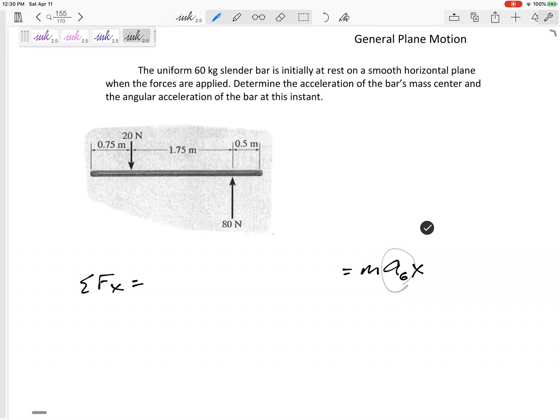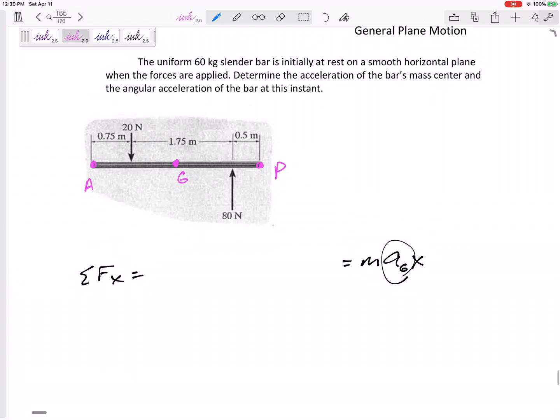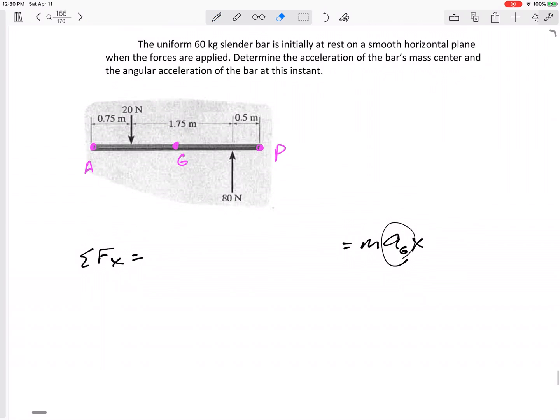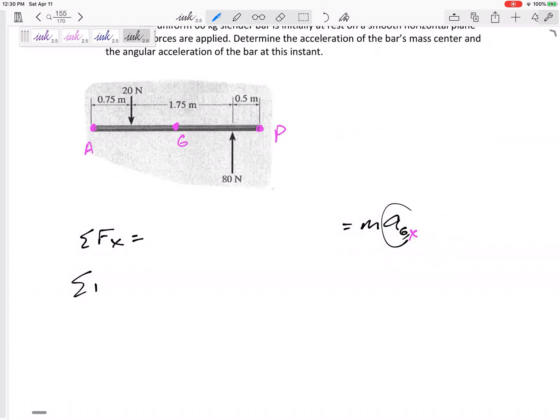and I would sum my forces in X equals M-A-G-X. So this is where we've got to be really careful because this whole thing, G, might be accelerating different from P, might be accelerating different from A. So today, we're talking about the acceleration of point G. This is the acceleration of G in the X direction. There's zero, so that would show me that the acceleration in X is zero. Or I would sum the forces in Y, negative 20, positive 80, anything in the Y direction equals M-A-G in the Y direction. So that would give me the acceleration of the center of gravity, G, at this instant.